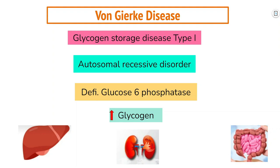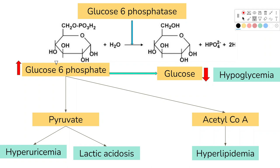This buildup impairs their ability to function normally. In this disease, in the glycogen breakdown process, one of the key steps is to convert glucose-6-phosphate into glucose, and this is mediated by the enzyme glucose-6-phosphatase. Due to mutation in the gene that produces this particular enzyme, it will lead to faulty metabolism and this disease results.